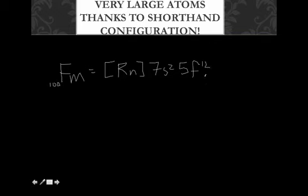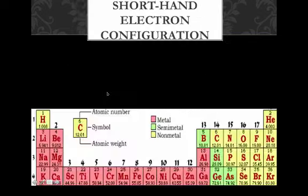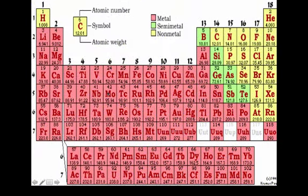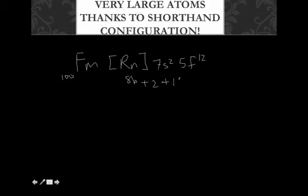Fermium with 100 had radon, then 7S2. And then we said 5F had 12. And now, using our shorthand notation, I've represented 100 electrons, because radon has 86 of them. Fermium needs 100 electrons. Radon has 86 of them. Then we have 7S2, so there's 2 more. And then 5F12, so there's 12 more. So that adds up to 100 total electrons. That's exactly what we were looking for to make fermium.